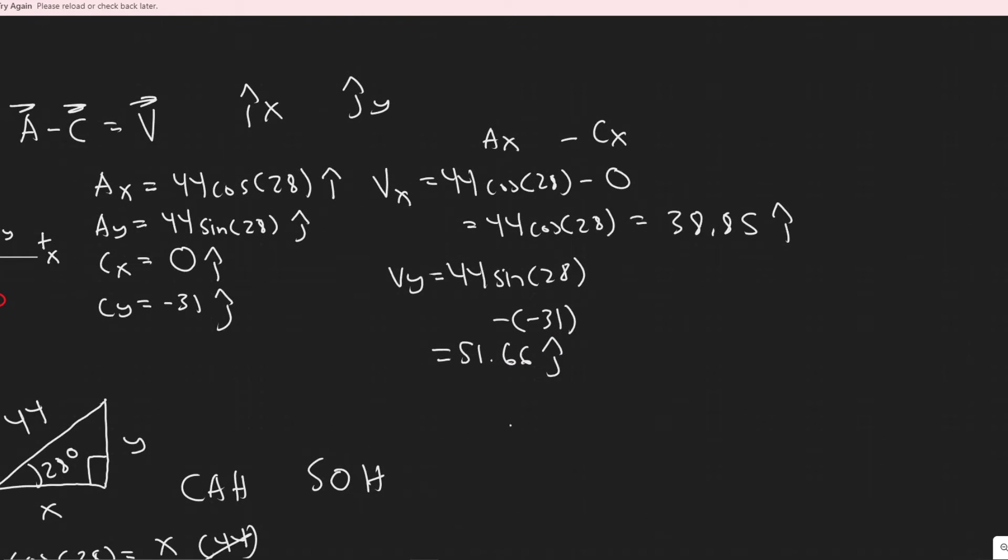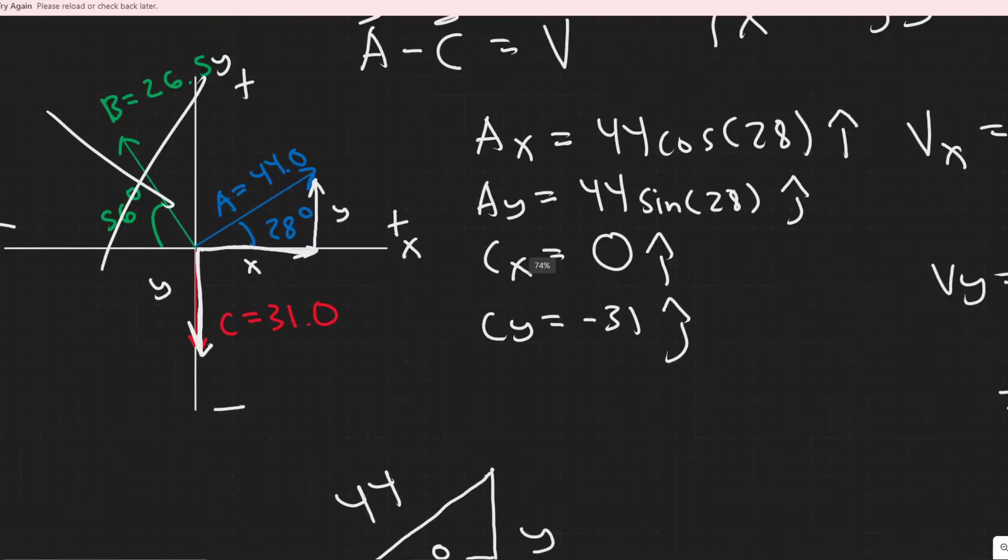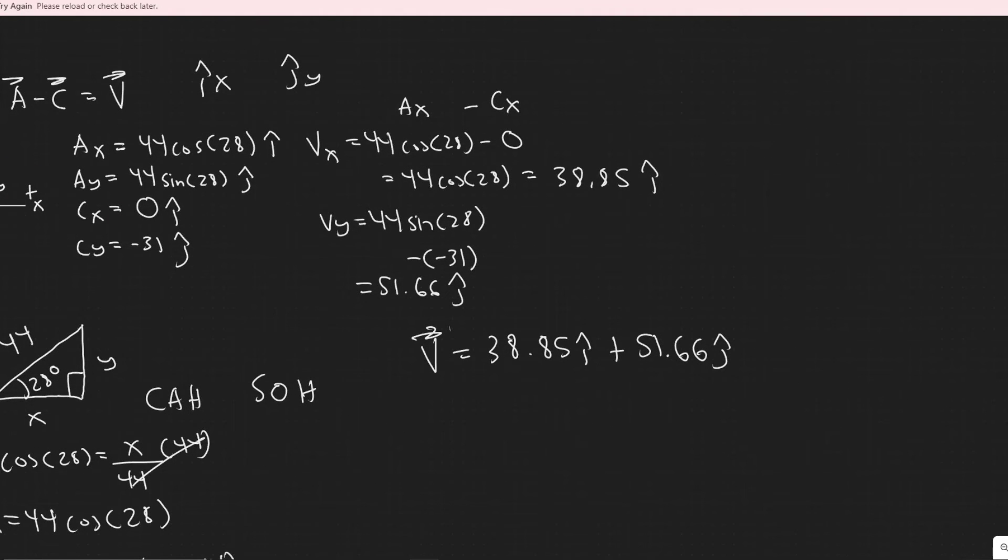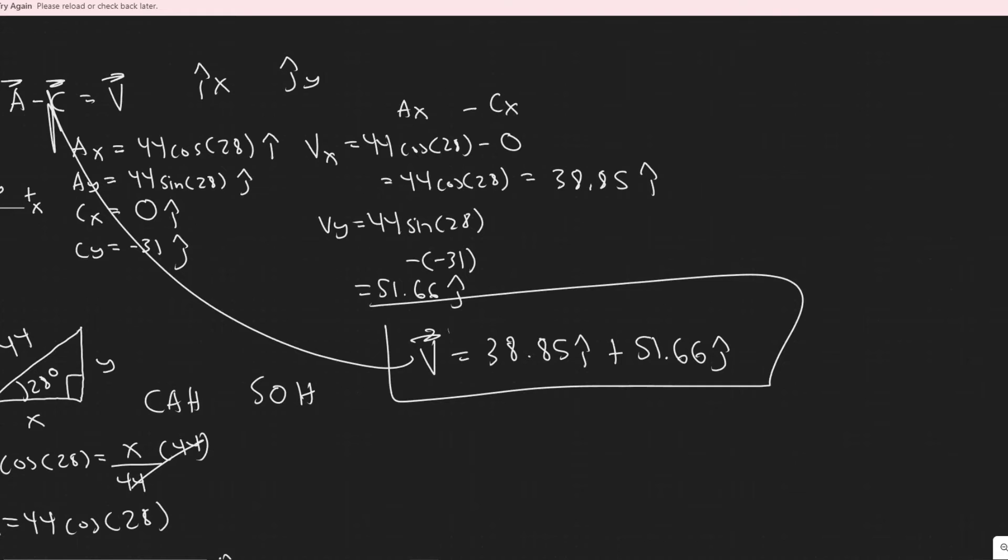So they don't tell us which form they want it in. But if you wanted to say A minus C, and you wanted to write it in its component form, you would just now just add up their components. So you just have, well, this is the x component of v, this is the y component of v. Therefore, v in its component form is just them added up like this. And then you're able to distinguish the direction based off the unit vector. So I know it's 38.85 in the x, and then in the y, it's 51.66. So if you added these up, it would be something like this, pointing in this direction, because they're both positive. So I don't believe they don't tell us which direction they want us to put it in. But this would be, or not which direction they want us to put it in, if they want it in its magnitude form, or its component form. This would be its component form. So A minus C is this right here.